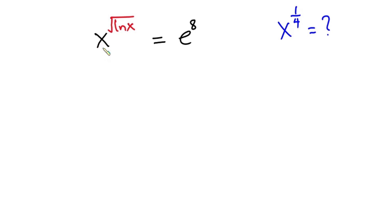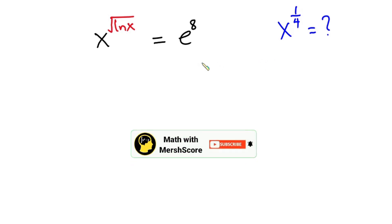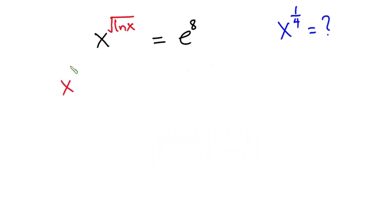Hello everyone. In this video we have this interesting problem: x to the power square root of natural log of x is equal to e to the power 8, and we have to find the value of x to the power 1 over 4. Before we begin, as always pause the video and try first. If you're new here, consider subscribing and don't forget to like this video.